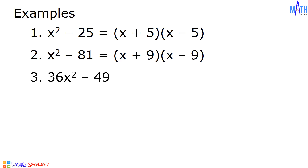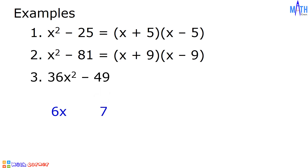Example number 3: Let us factor 36x squared minus 49. Square root of 36x squared is equal to 6x. Square root of 49 is equal to 7. And we have 6x plus 7 times 6x minus 7.